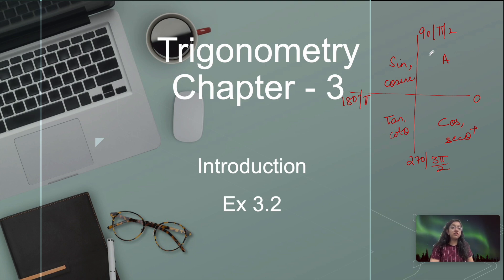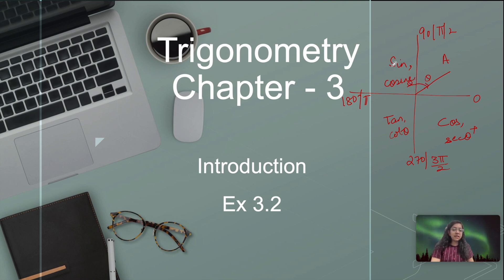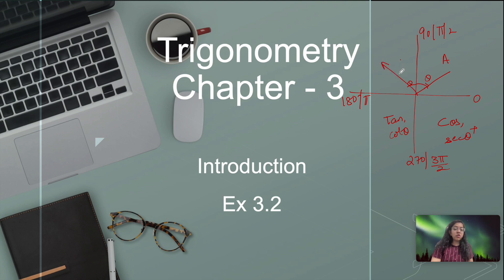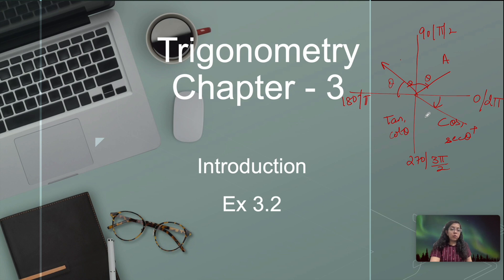Now about the complementary angles and quadrants: 90 minus theta is first quadrant, 90 plus theta is second quadrant, 180 minus theta is second quadrant, 180 plus theta is third quadrant, 270 minus theta is third quadrant, 270 plus theta is fourth quadrant, and 2π minus theta is fourth quadrant again.